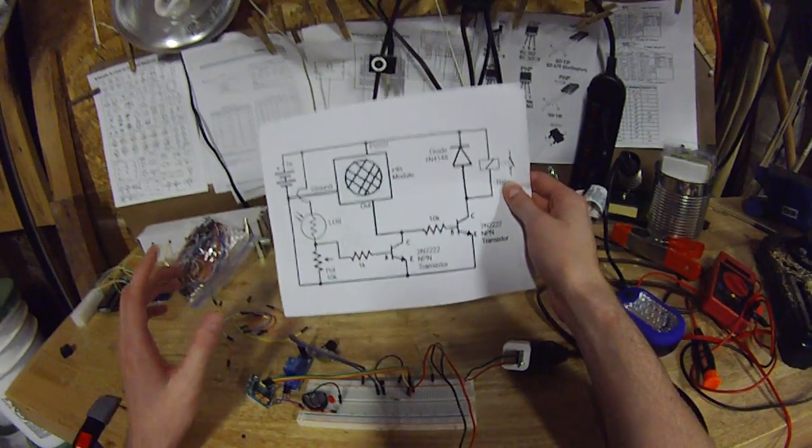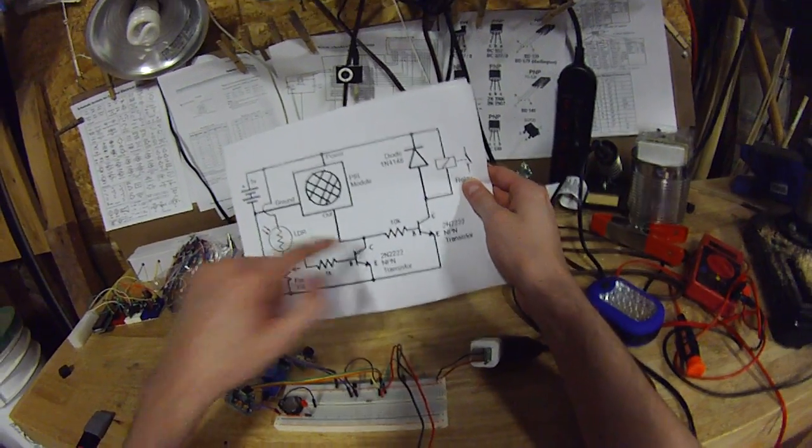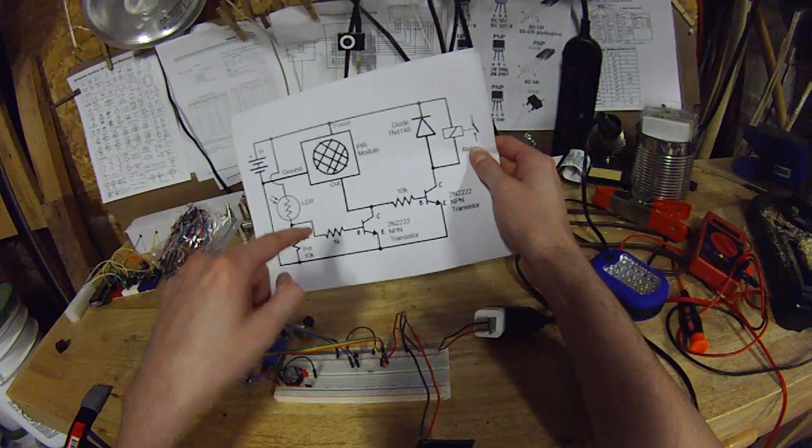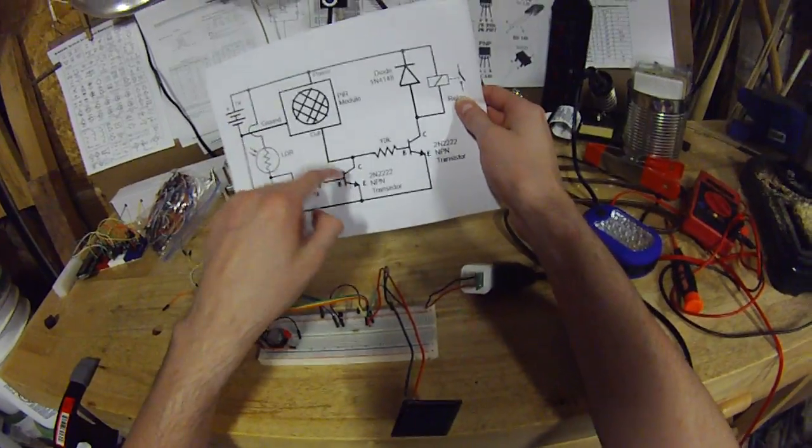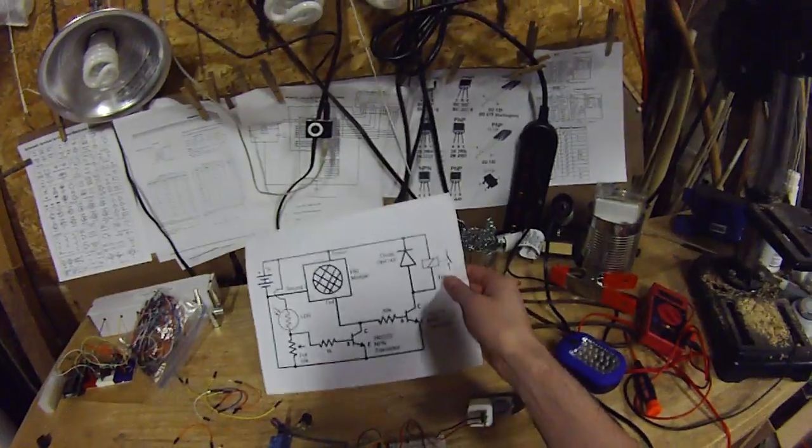So by doing it as a voltage divider, you're actually turning it off with voltage. So when light is on it, it's less than one volt. So it can't come on. And in the darkness, it becomes more than one volt. So it can come on.